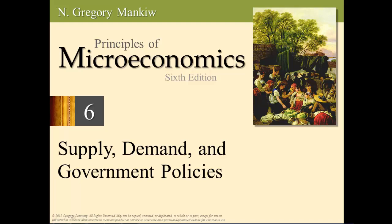Chapter 6 is an extension of Chapter 4. In the previous chapter we looked at the market, what it is, and how it operates on its own. Chapter 6 continues by looking at what happens when the government, through laws and policies, intervenes in market operations. We will see how the effects of government interventions are sometimes different from the original intent.